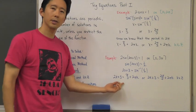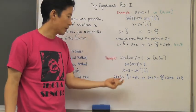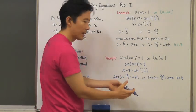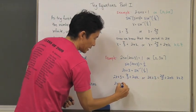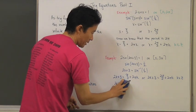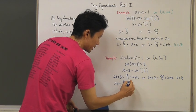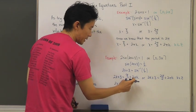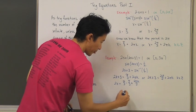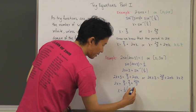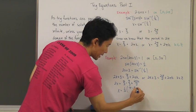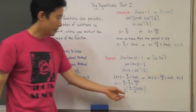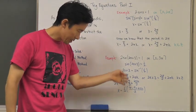Now we just need to solve for x. Subtracting three and dividing by two: focusing on the first equation, two x equals pi over three minus three. Putting everything over a common denominator, that's pi over three minus nine over three plus six pi k over three. So x equals pi minus nine plus six pi k, all divided by six. Those are all the particular values for this side of the equation without a domain restriction.